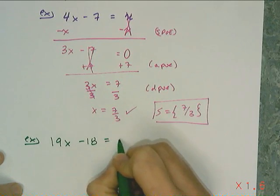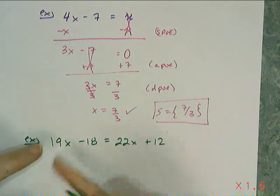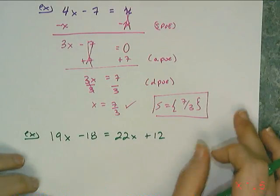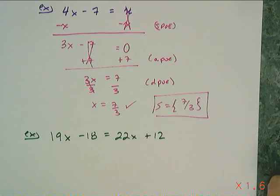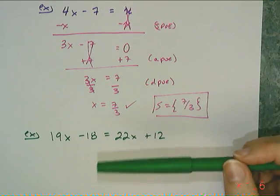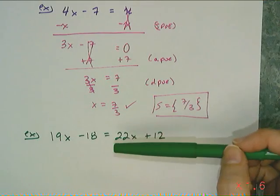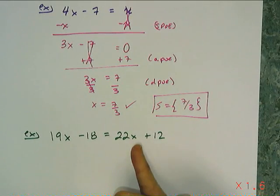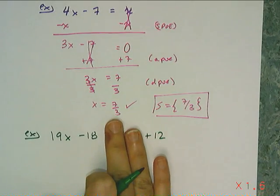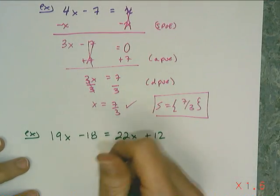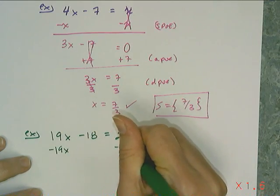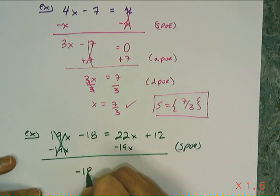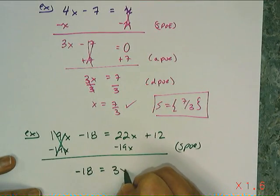So if I have 19x minus 18 equals 22x plus 12, I need to either get rid of the 19x on this side, or get rid of the 22x on this side — I can choose either one. I'm the kind of person who knows the mistakes I make, so I know I'm prone to make a sign mistake. I want to try to pick the side where x will stay positive. Since 22 is bigger than 19, I'm going to subtract off 19x from both sides, which cancels off those x's, leaving negative 18 on this side. 22 minus 19 is 3x, and then I get plus 12.